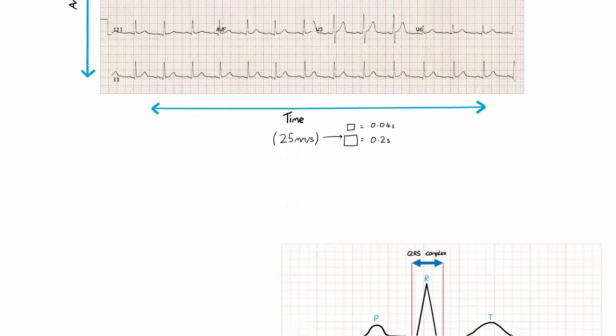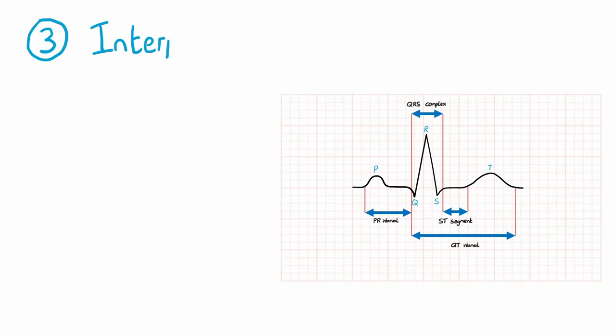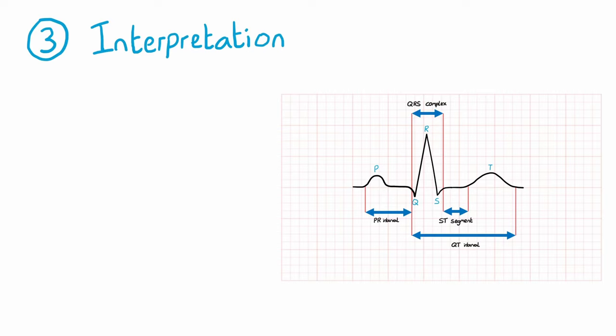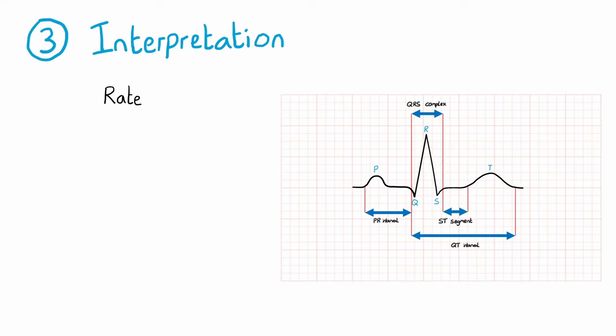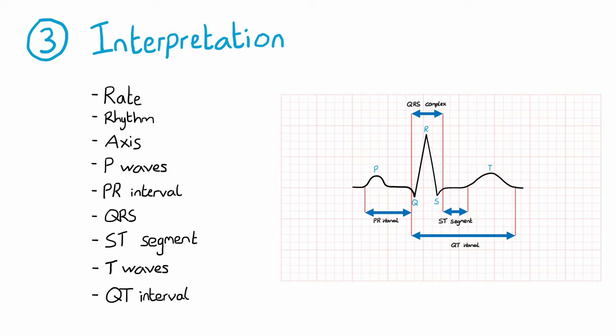Now we can move on to our interpretation. To avoid missing any steps, it's useful to follow a structure when interpreting the ECG. The easiest structure I think to remember is rate, rhythm and axis, followed by each component of the ECG complex in the order that it arises. So let's go through each of these steps in order.